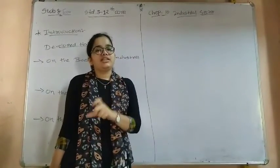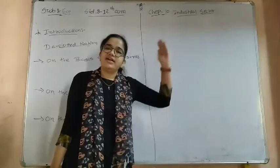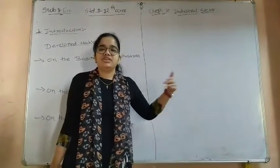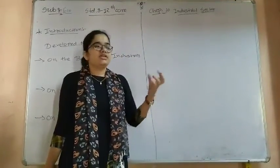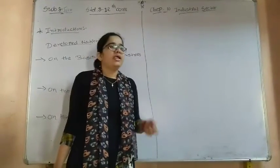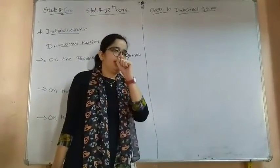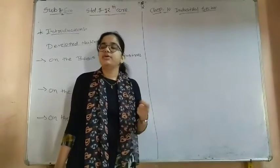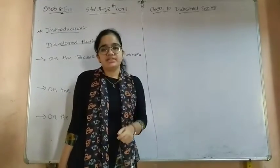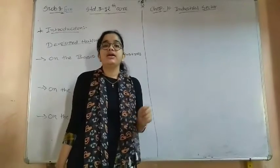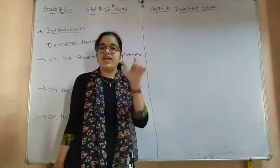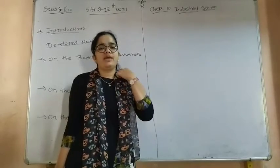In the previous chapters, the syllabus has some cut-downs. For example, in the banking sector, the functions of the commercial bank — in the primary function there is credit creation. This point is excluded. So there are some points that have been removed.